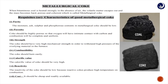Metallurgical coke is produced when bituminous coal is heated strongly in the absence of air. The volatile matter escapes out and the mass becomes hard, porous, and coherent — this is called metallurgical coke.